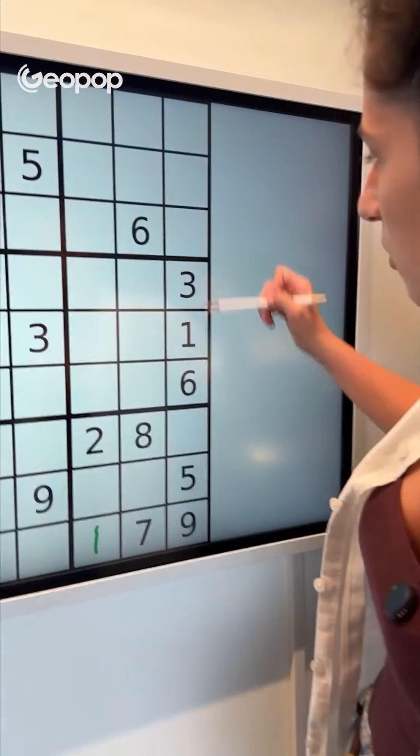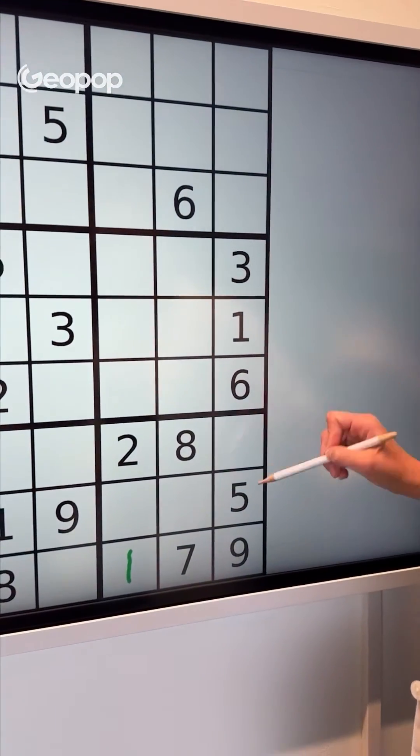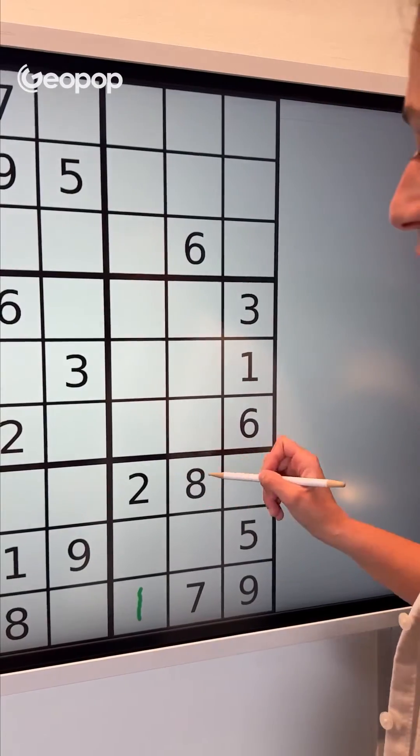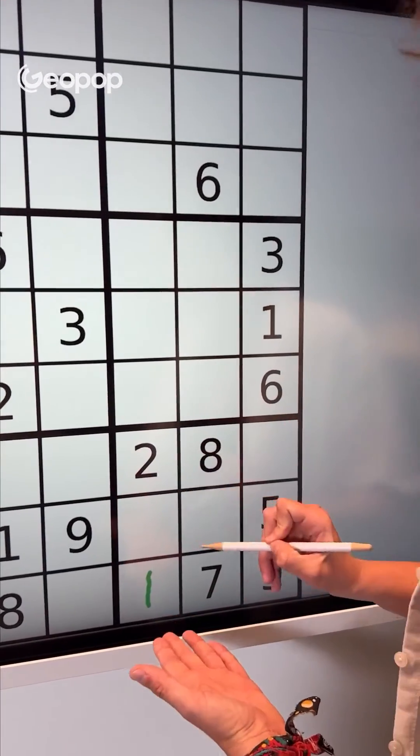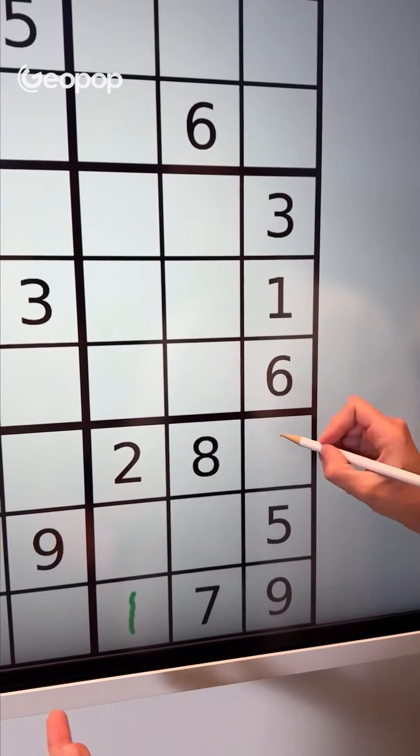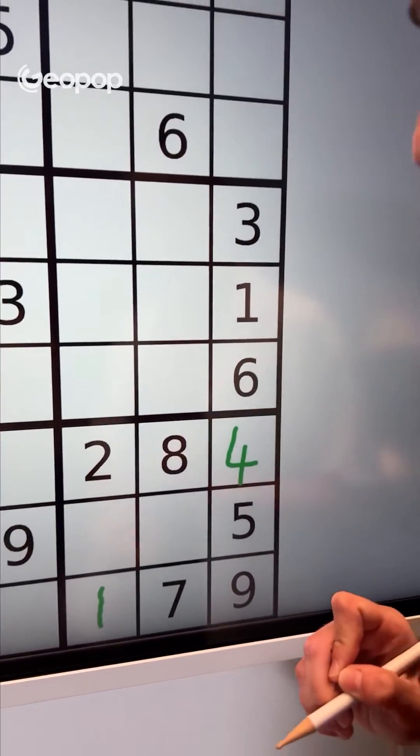Or perhaps, for example, we can look at this block. This 8 tells us that the 8 can't be here, it can't be here either, and it can't be here. So in the end, we can deduce its position from the other 8s in the grid. Or we can focus on the columns, the rows, or the blocks. For example, in this column, we've got 1, 3, 6, 5, and 9. 2, 8, 7, and 4 are missing, but 2, 8, and 7 are already in this block, so they can't be in this position. Therefore, we can be sure that there's a 4 here.